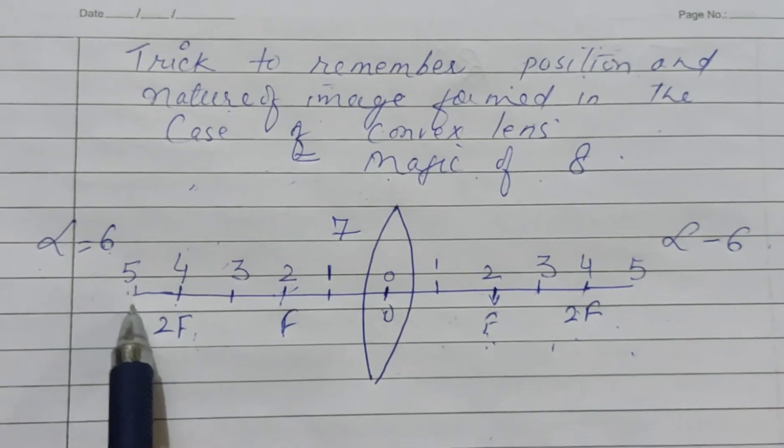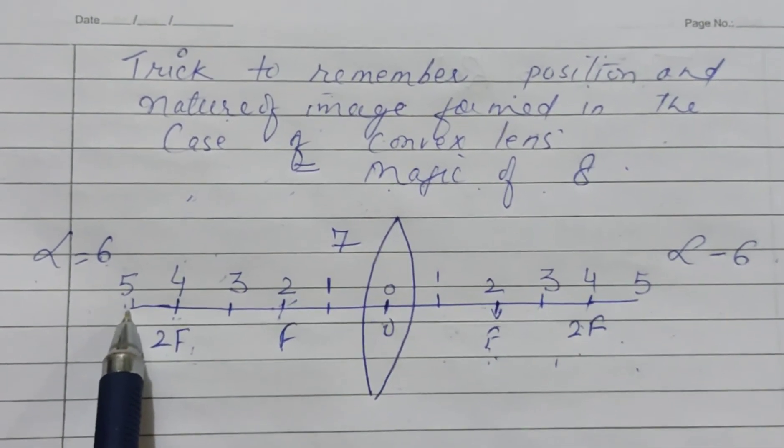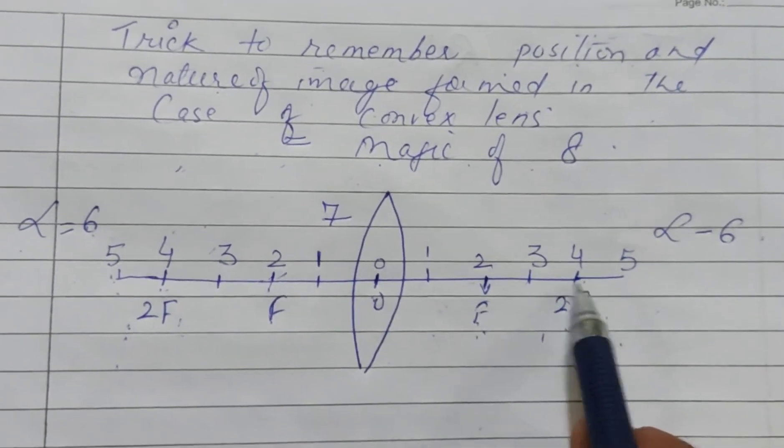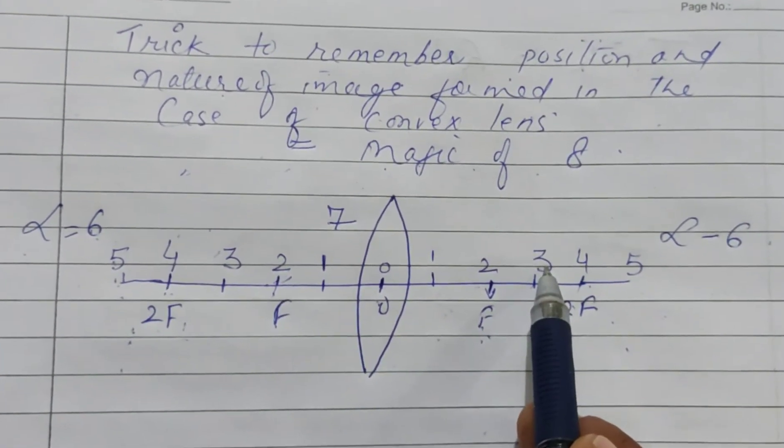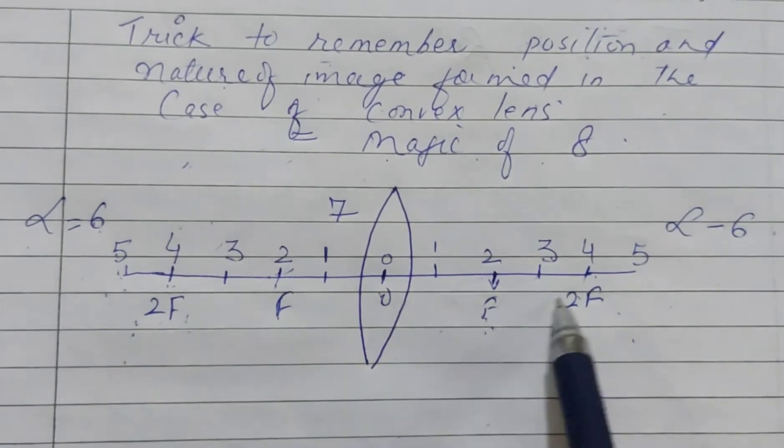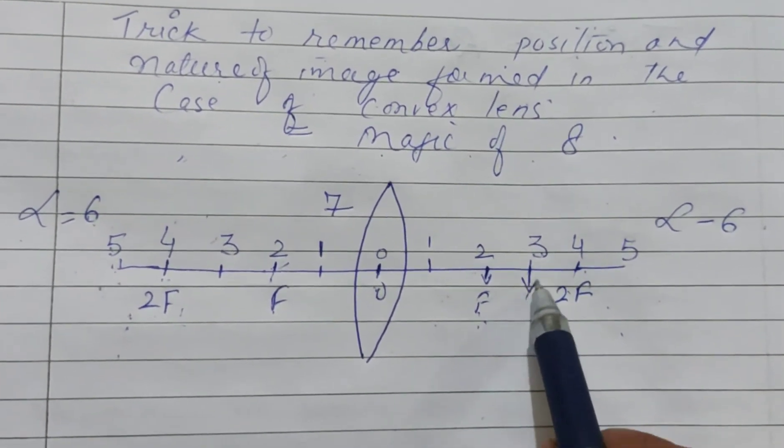Suppose we have the point beyond 2f, that is 5. Beyond 2f it is 5, so 5 plus 3 will give 8, and right side 3 is between f and 2f. So the object beyond 2f will give a real, inverted, and diminished image between f and 2f.